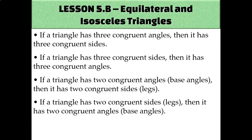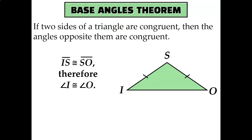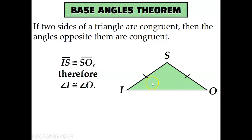These four ideas can be summed up with the base angles theorem, its converse, and its corollaries. The base angles theorem tells us that if two sides of a triangle are congruent, then the angles opposite them are also congruent. For example, in isosceles triangle ISO, side IS is congruent to side SO. That means the angles opposite those sides — angle I (opposite SO) and angle O (opposite IS) — must be congruent.